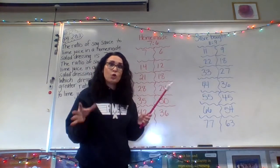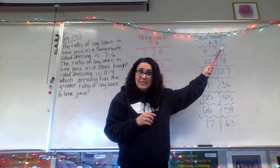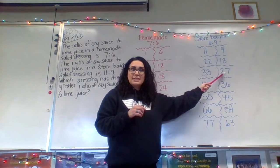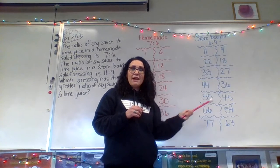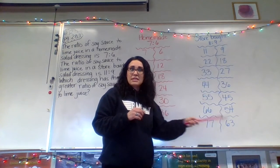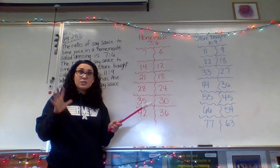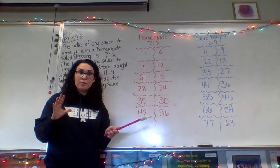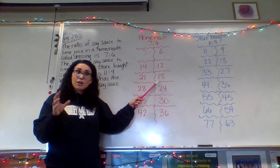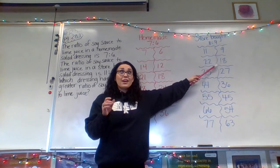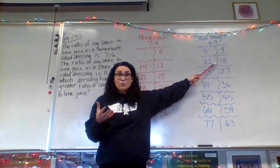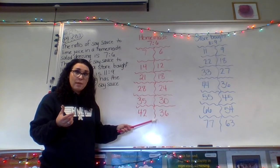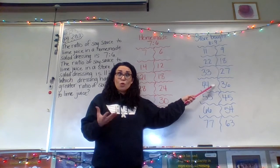For the store-bought dressing, the original ratio is 11 to nine. The equivalent ratios are: 11 to nine, 22 to 18, 33 to 27, 44 to 36, 55 to 45, 66 to 54, 77 to 63. Now let's look for common points — common numbers in these ratio tables. I noticed that both tables have a point with 18 parts lime juice, and both have a point with 36 parts lime juice.